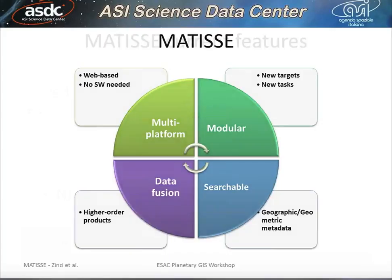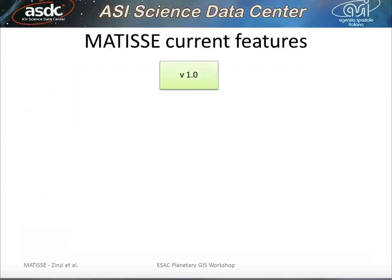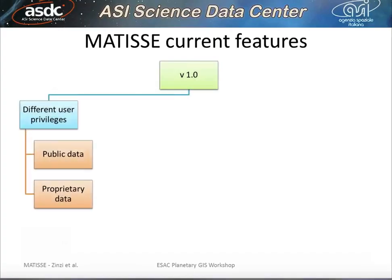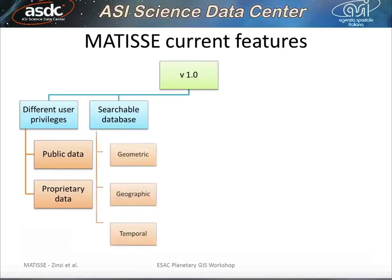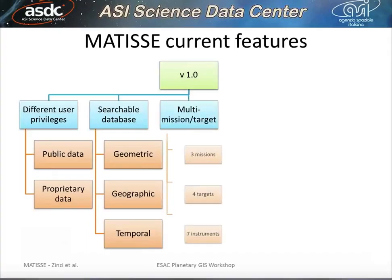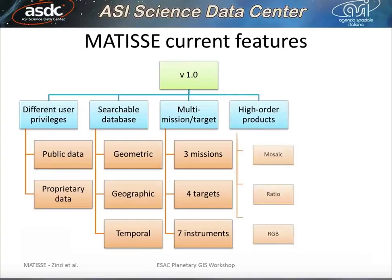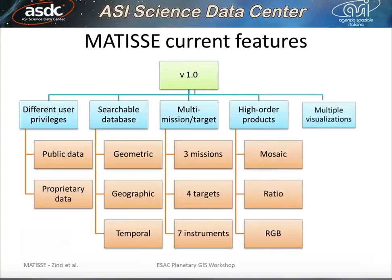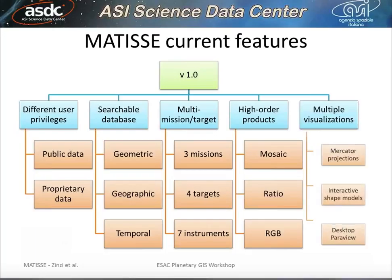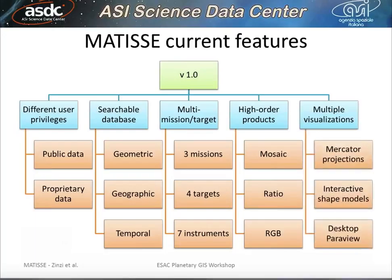At the present time, we are at version 1.0, the first stable version, with different user privileges — both public and proprietary data — with a searchable database, different missions and targets, the possibility to compute high-order products, and multiple visualizations: 2D projection, interactive shape model on the web, and downloadable high-resolution output to be read with ParaView.